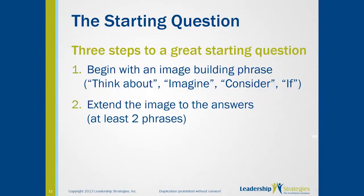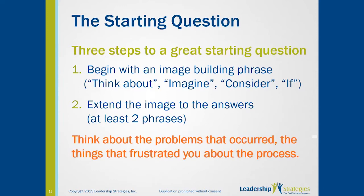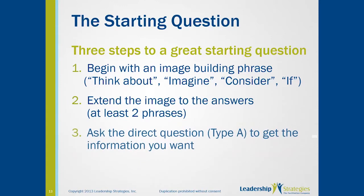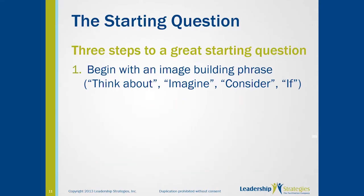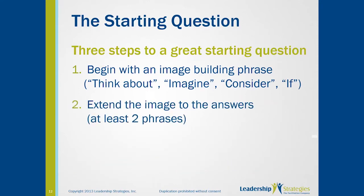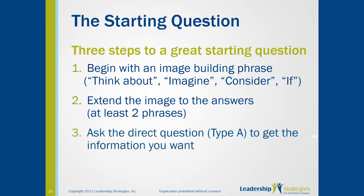Step two, you expand the image with at least two phrases. As we did in our question: think about the problems that occurred, the things that frustrated you. And then you ask the Type A question: what are the problems in the current hiring process? So as you can see, there are just three steps. Step one, begin with an image-building phrase. Step two, extend the image with at least two phrases so people can see their answers. And then you ask the Type A question.